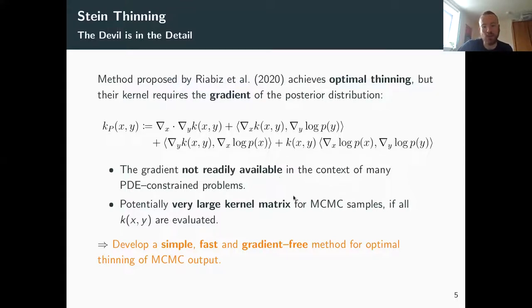If you see here and here and here, you actually need the gradient of the posterior distribution, and as you know this is not always simple and it can be expensive, especially in the context of these PDE-constrained problems that we're often looking at. Additionally, if you want to compute this of all the samples, then you can end up with a very large kernel matrix. So our objective here was to develop a simple, fast, and gradient-free approach for thinning of MCMC output.